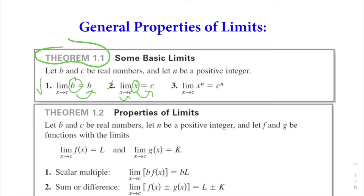Number 3 shows the same rule but with exponents: the limit as x approaches c of x to the n equals c to the n. Essentially, all we're doing is plugging in c for x in our function. So x to the n is our function, and c goes in for x.